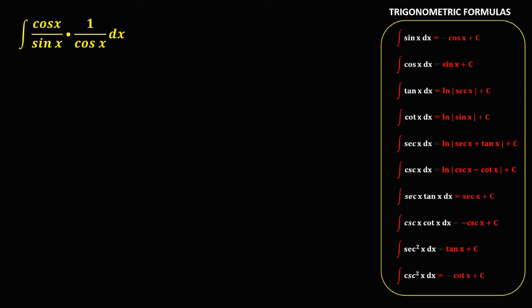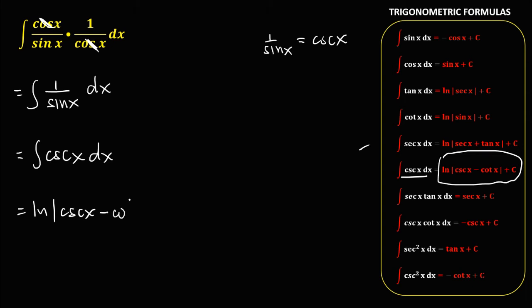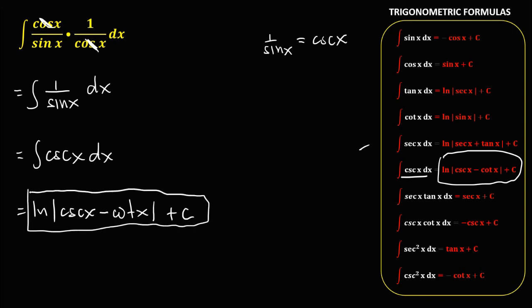For this given, we can simplify by canceling out cosine x, so we have the integral of 1 over sine x dx. Using the trigonometric identity that 1 over sine x is equal to cosecant x, that's the integral of cosecant x dx. The integral of cosecant x dx equals ln of the absolute value of cosecant x minus cotangent x, plus c. So this is the final answer.